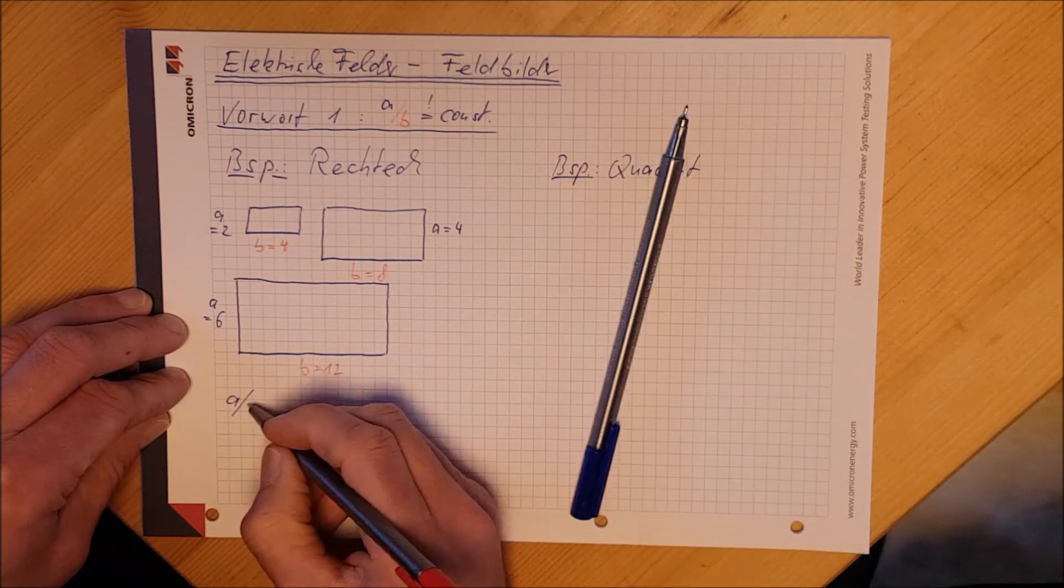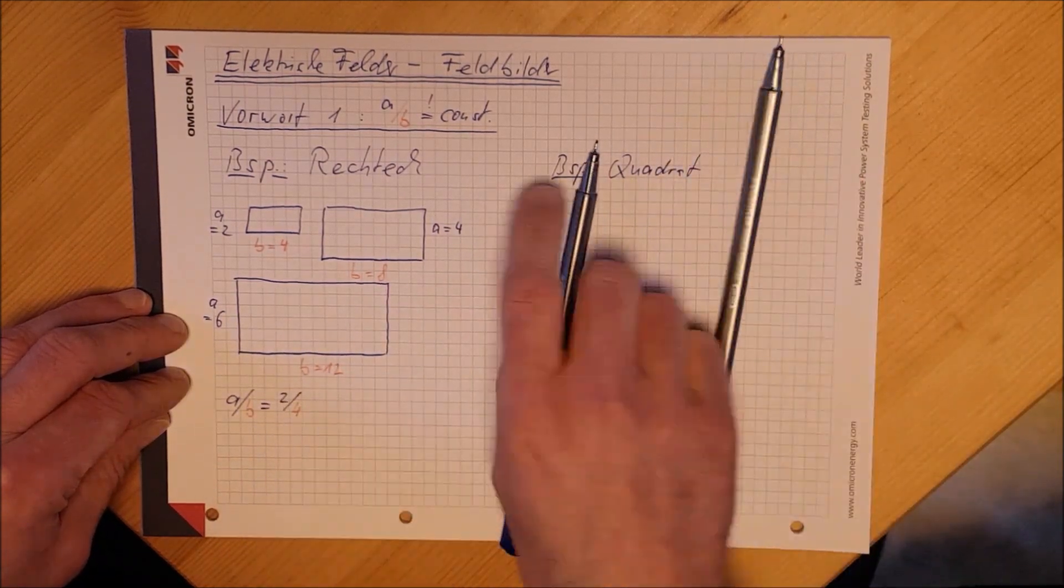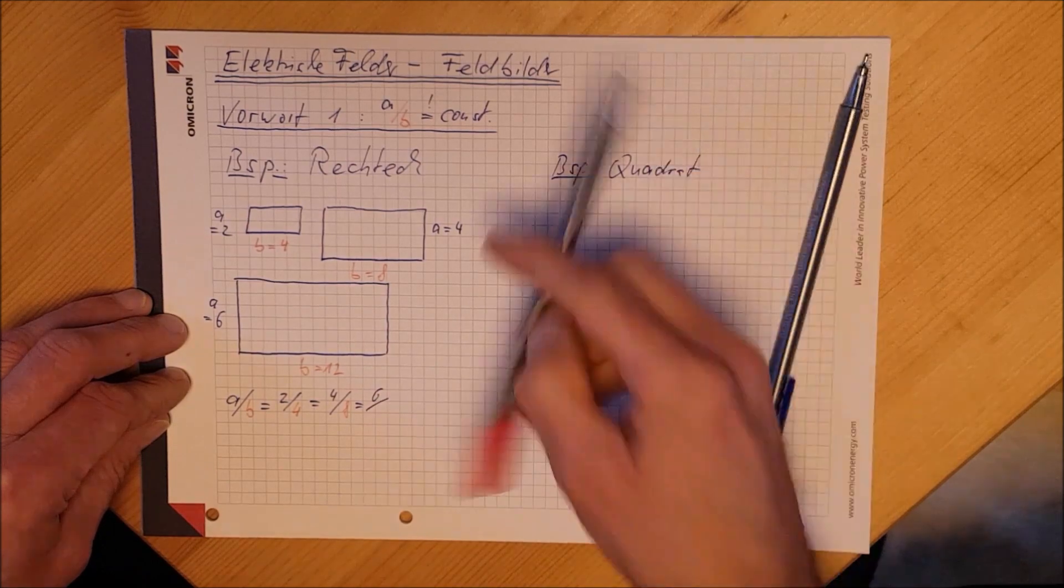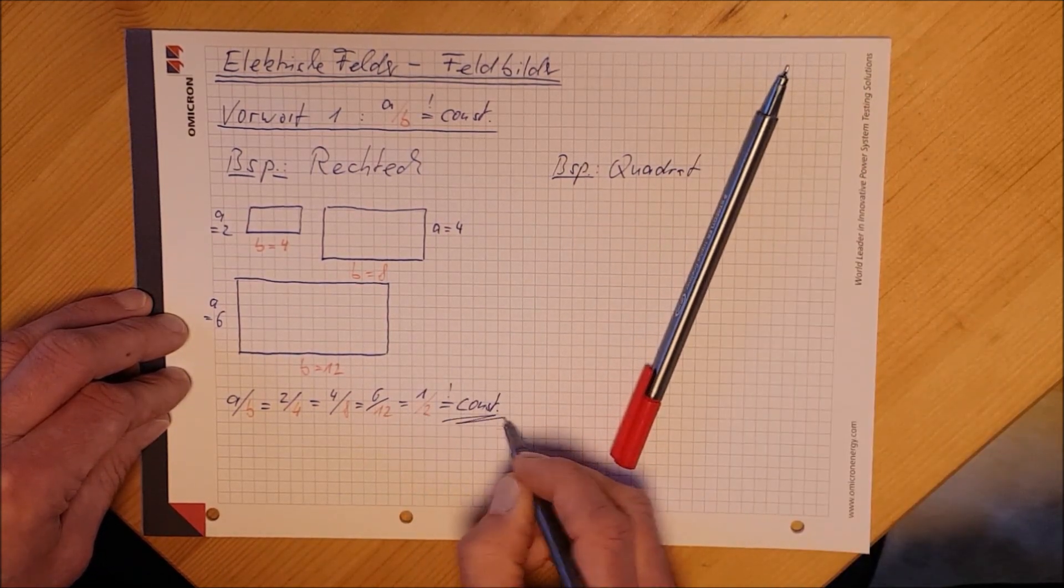Letztlich habe ich einen Quotienten a zu b, der ein Seitenverhältnis 1 zu 2 beschreibt. Das ist für all diese drei Rechtecke konstant.